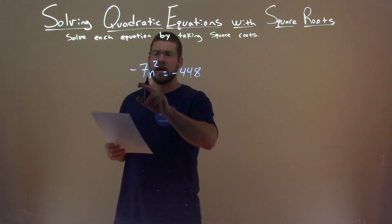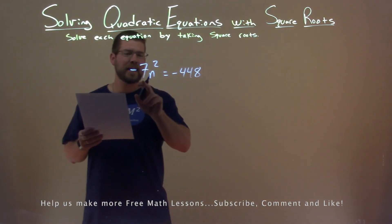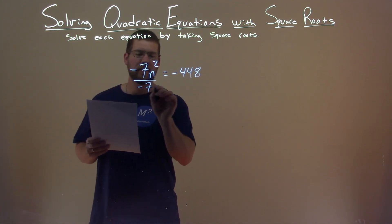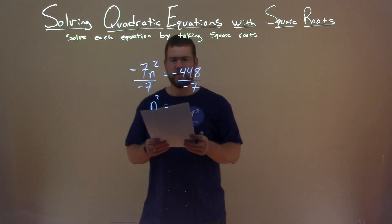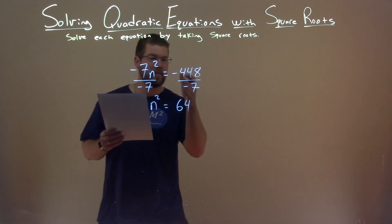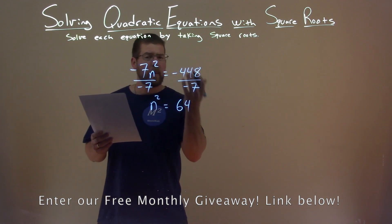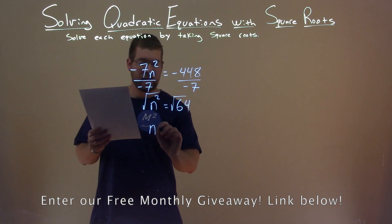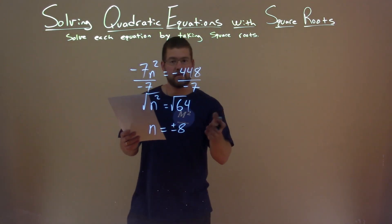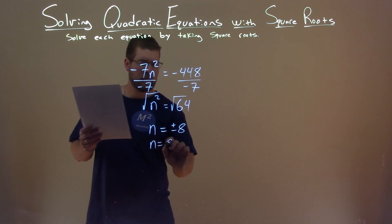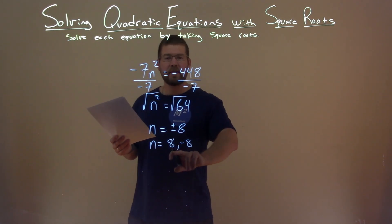We're given our problem: negative 7n squared equals negative 448, and we want to solve this equation by taking the square root. I need to get n squared by itself, so I divide both sides by negative 7. That leaves n squared completely by itself. Negative 448 divided by negative 7 is positive 64 — negative divided by negative is positive. So n squared equals 64. Taking the square root of both sides, the square root of 64 is 8. But we can't forget the plus and minus. So n equals a positive 8 and negative 8. Our final answer is n equals 8 and negative 8.